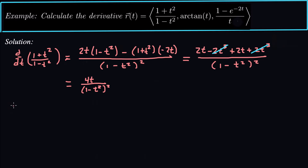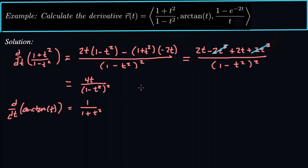Next, the derivative of arctan — d/dt of arctan — is something we just have to memorize: it's 1 over (1 + t²). If you're in Calculus 3, you've been through Calculus 1 and 2 and have seen arctan quite a few times. To actually derive it, you use implicit differentiation starting with tangent, but after that it's not too bad. So that's the derivative of arctan.